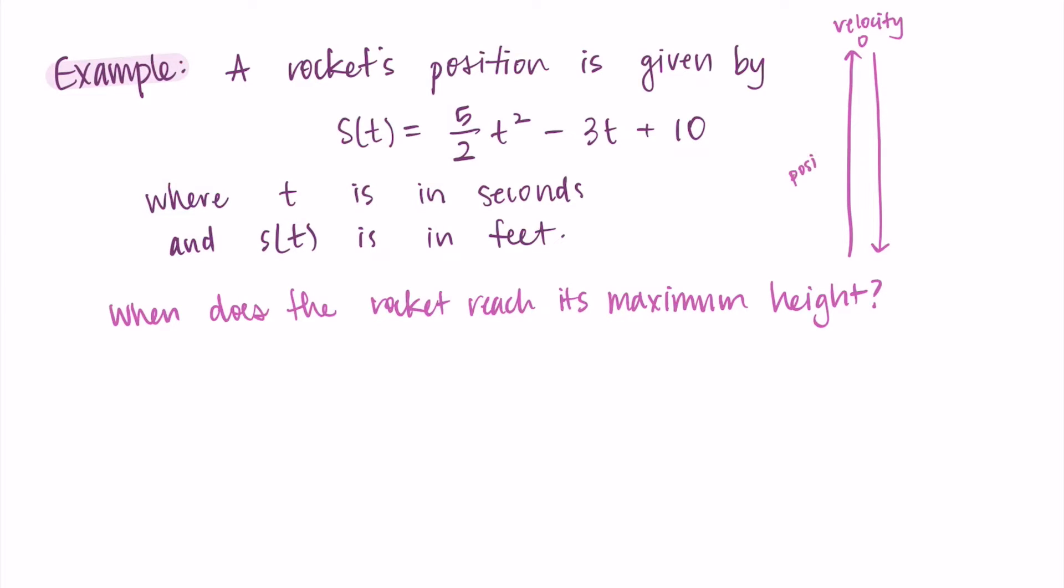On the way up it has a positive velocity. On the way down it has a negative velocity. But at the top it has a velocity of zero. You can think positive velocity means it's getting further away from the starting point.